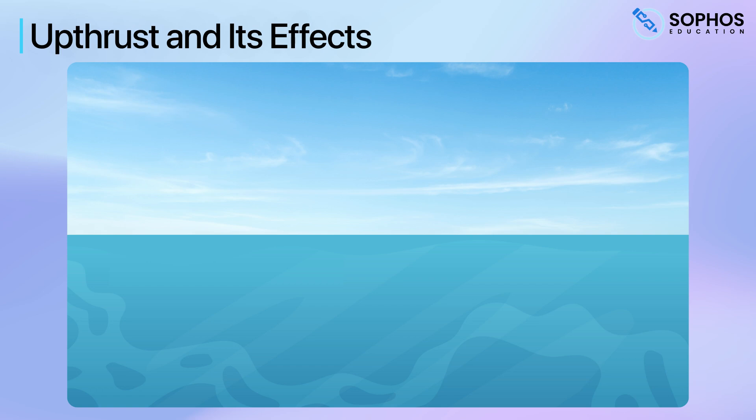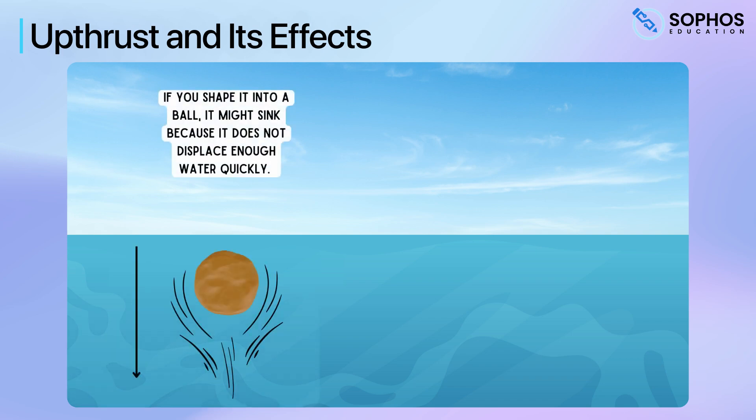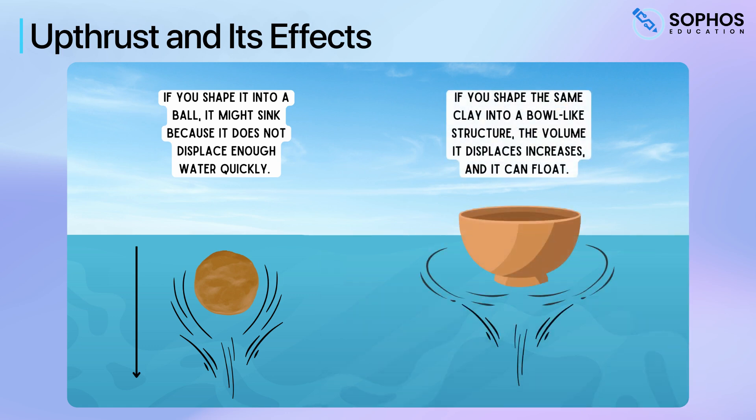Shape also affects how fluid flows around the object, which can influence the ease with which it displaces fluid. Consider an example where you have a lump of clay. If you shape it into a ball, it might sink because it does not displace enough water. However, if you shape the same clay into a bowl-like structure, the volume it displaces increases, and it can float.